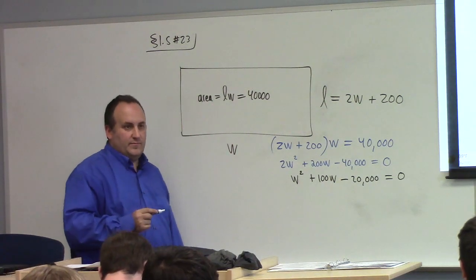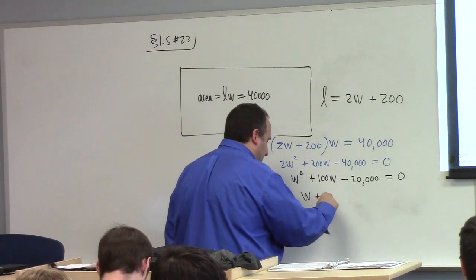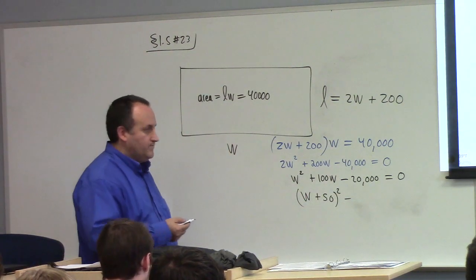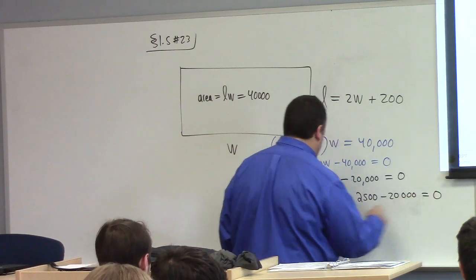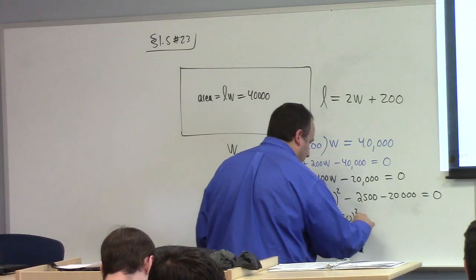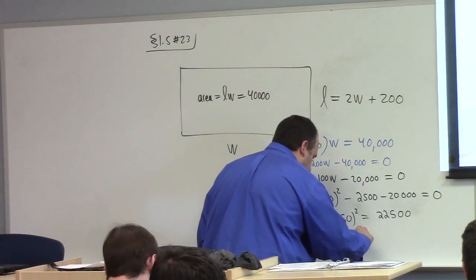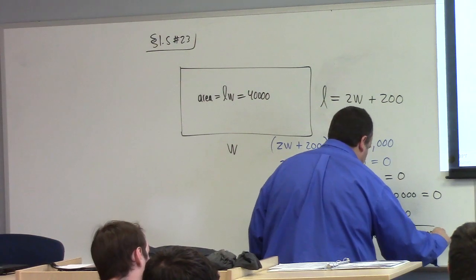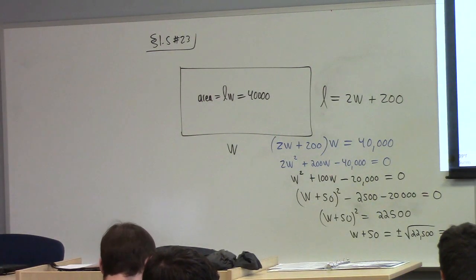Someone has suggested completing the square. So as you know, like a moth to a flame, I cannot resist. Completing the square here gives me w plus 50 quantity squared minus, what's 50 squared? 2,500. So we got w plus 50 quantity squared is equal to 22,500, which then, using the square root property, gives me w plus 50 is plus or minus the square root of 22,500, also known as 150.